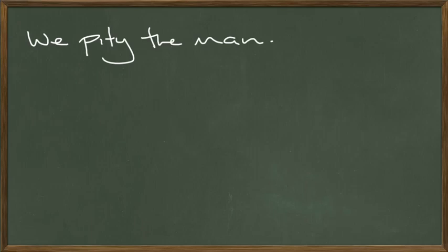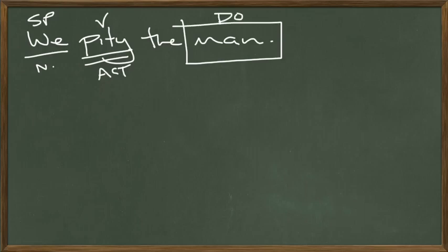Okay, in the first sentence we have 'we pity the man.' Subject of the sentence: we, subject pronoun, it's in the nominative case. What are we doing? We're pitying, that's active verb because the subject is doing it. And who are we pitying? We're pitying the man. Man is the direct object and it should go into the accusative case, right? That is an article adjective so we'll eliminate that. It doesn't go into the accusative case.